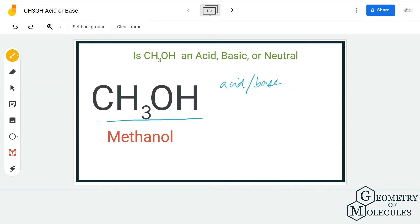It can donate electrons to Lewis acids. The compounds that accept electrons are known as Lewis acids, and the compounds that can donate electrons are known as Lewis bases. So here, as it can donate electrons, it is called a Lewis base.